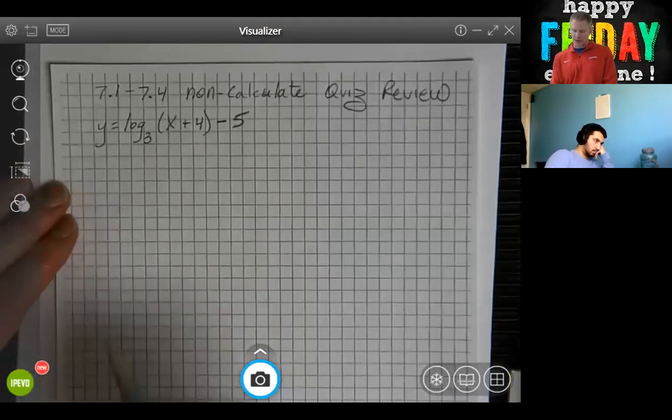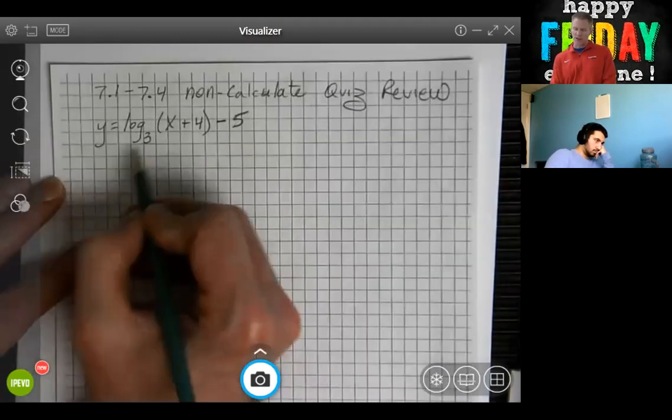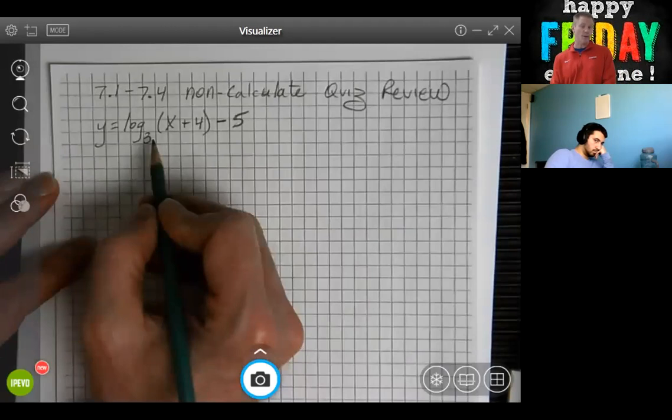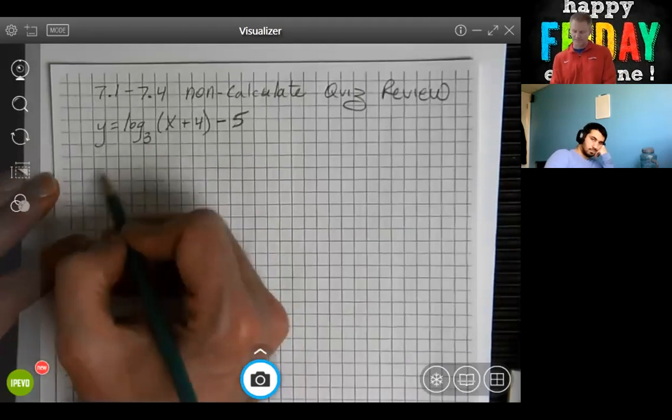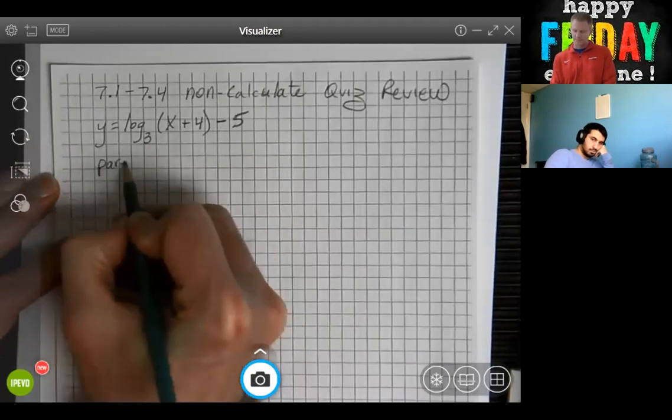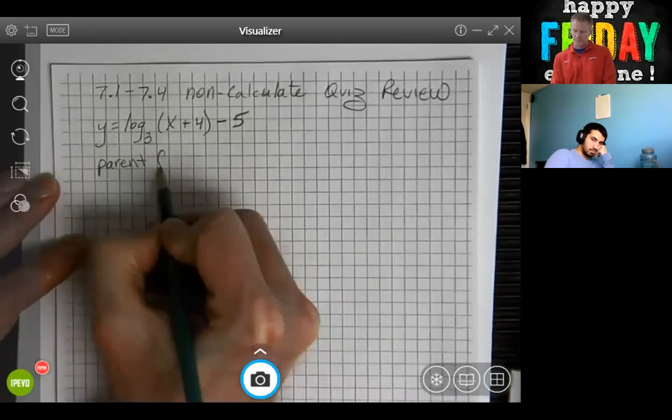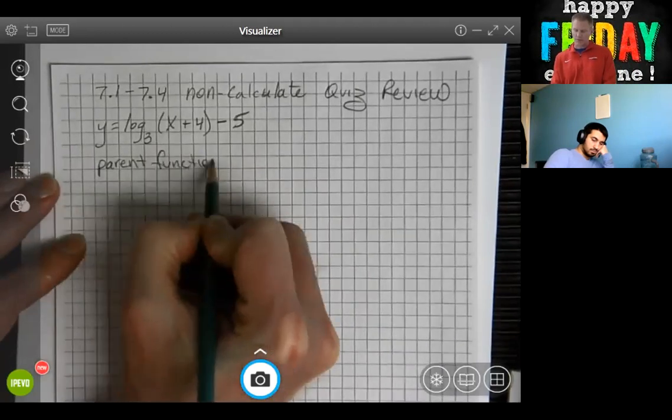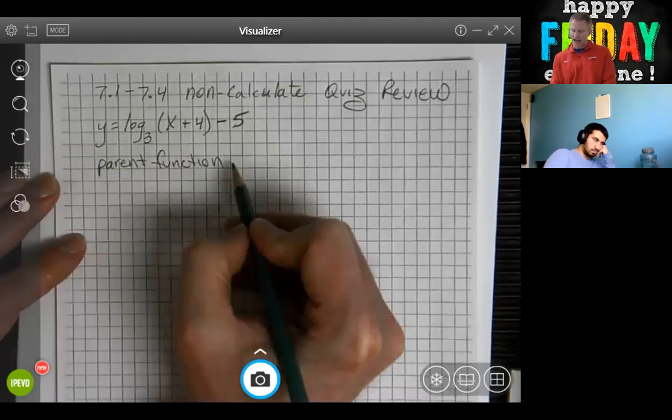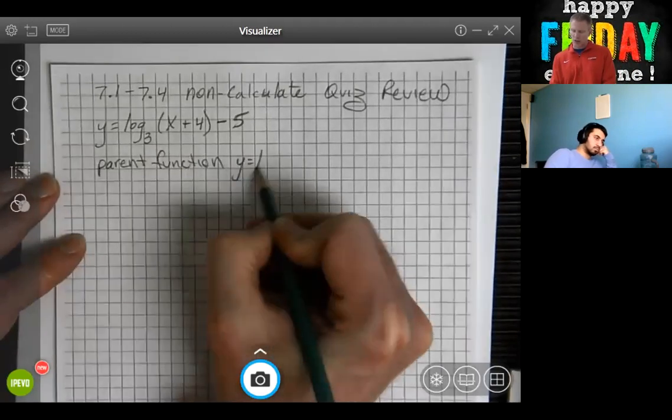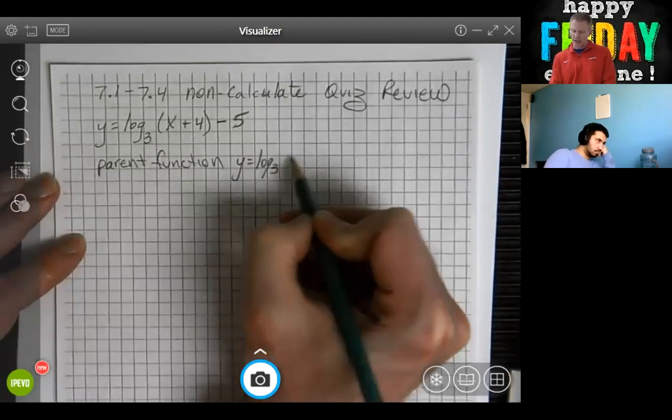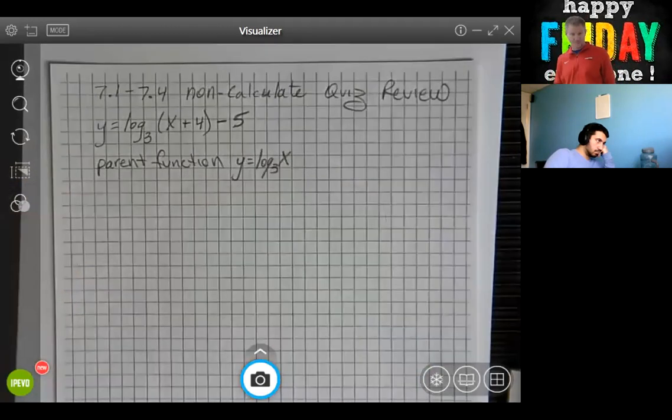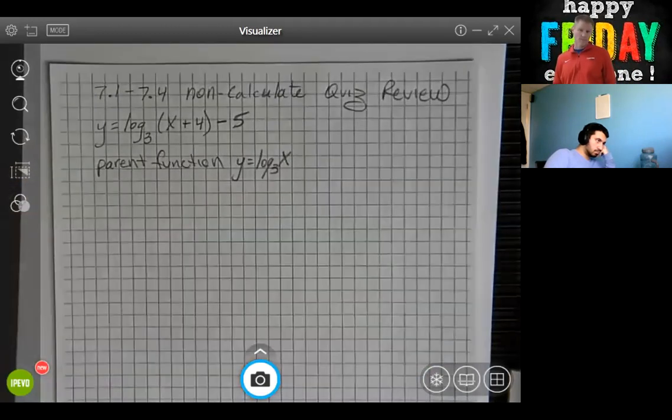Y equals log base 3 of x plus 4 minus 5. Well, the first thing we want to do is convert our into the parent function. So our parent function for this would be y equals log base 3 of x. That's our parent function, without any translation.